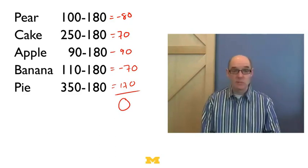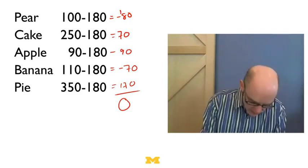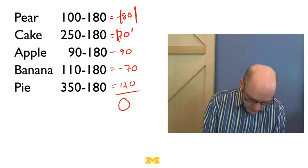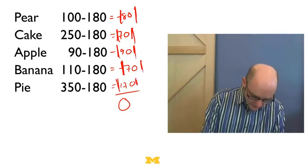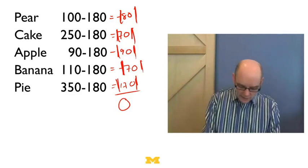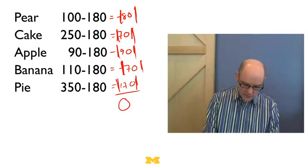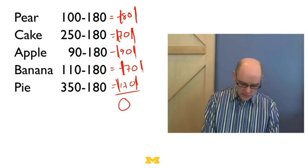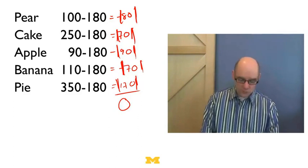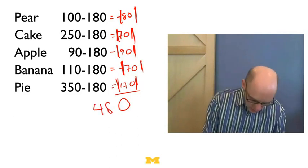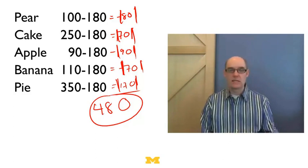So if I take 100 minus 180, that's going to be minus 80. 250 minus 180, that's going to be 70. 90 minus 180, that's minus 90. 110 minus 180 is minus 70. And 350 minus 180 is 170. Well, if I add all these things up, I'm going to get minus 80 plus 70 minus 90 minus 170 plus 70. It's going to be zero because it's going to be the same as the mean. So what I need is I need all these differences to be positive. So one thing I could do is I could just take the absolute value of all these things.